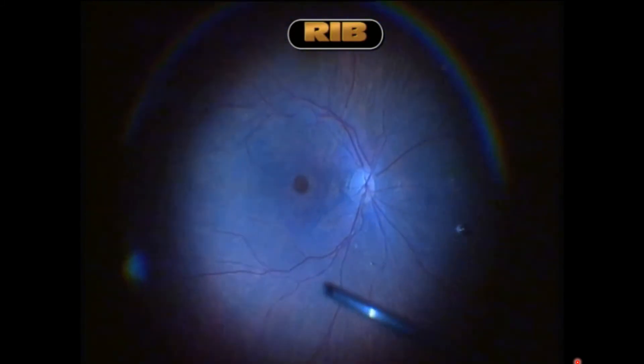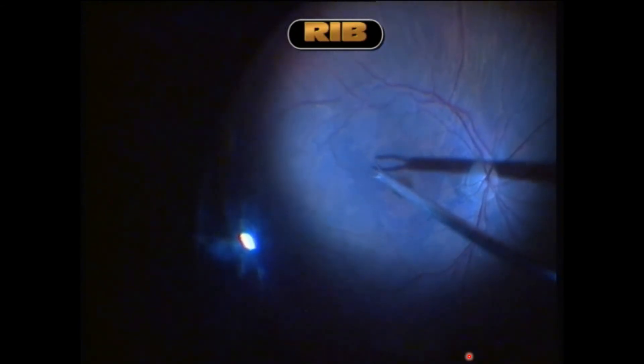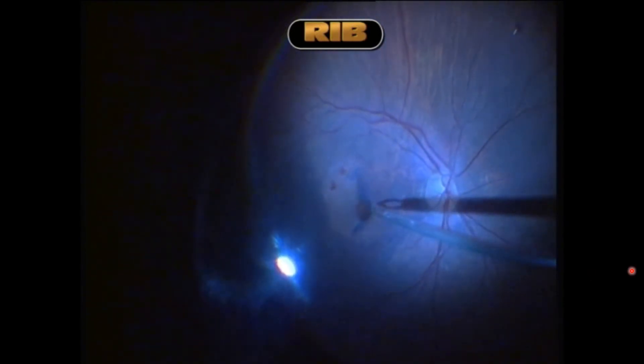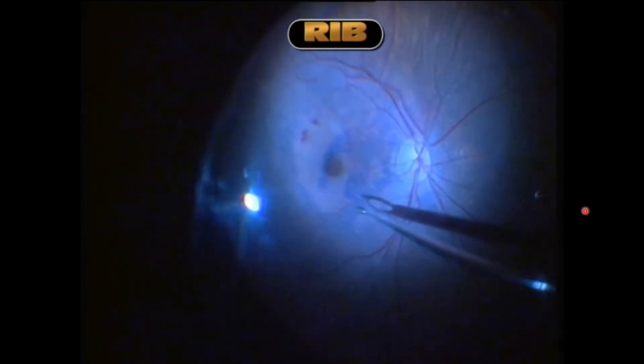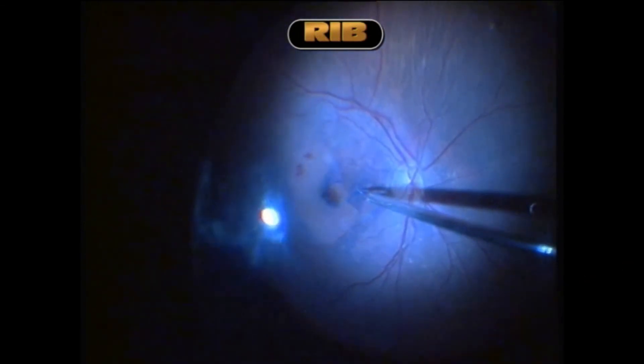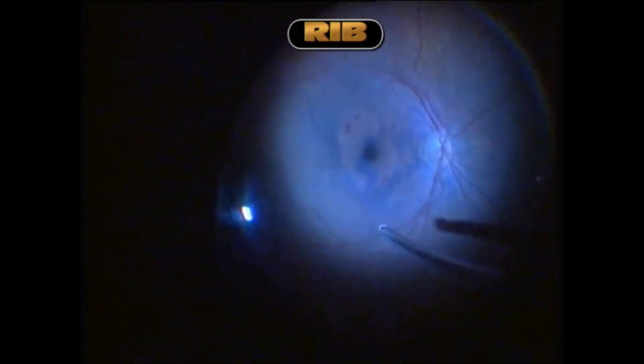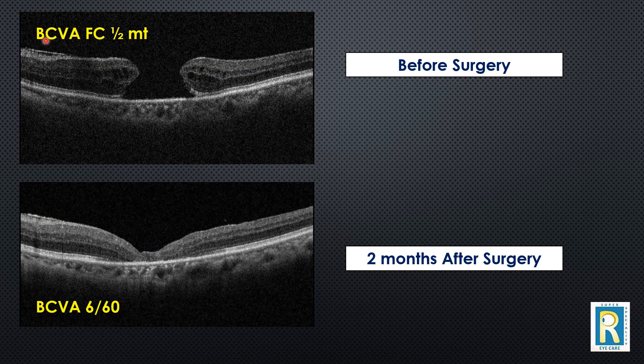In this case we first did vitrectomy, then also performed ILM peeling. We stained the internal limiting membrane with a special dye called brilliant blue dye — that is why the retina layer appears bluish. Using a special ILM peeling forceps, or atraumatic asymmetric forceps, we created a flap of the ILM. Rather than lifting and completely peeling off the ILM, we created flaps to cover the macular hole — an important modification developed over the last six to seven years. We do not remove the ILM; we just create flaps and leave them draped over the macular hole.